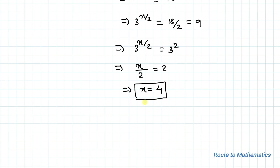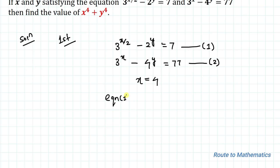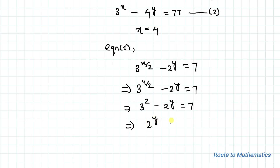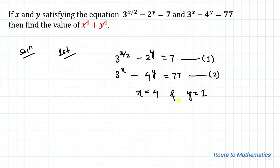To find y, we substitute x = 4 into equation 1: 3^(4/2) − 2^y = 7, which gives 3² − 2^y = 7, so 2^y = 9 − 7 = 2, and therefore y = 1.